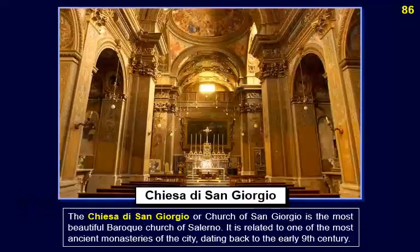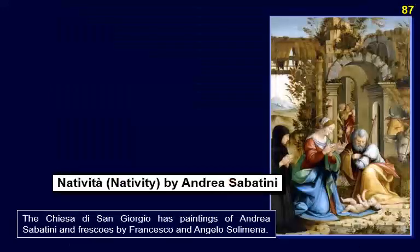The Chiesa di San Giorgio, or Church of San Giorgio, is the most beautiful Baroque church of Salerno. It is related to one of the most ancient monasteries of the city, dating back to the early 9th century. The Chiesa di San Giorgio has paintings by Andrea Sabatini and frescoes by Francesco and Angelo Solimena.